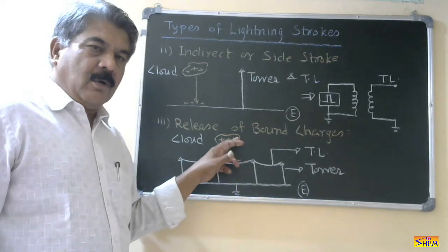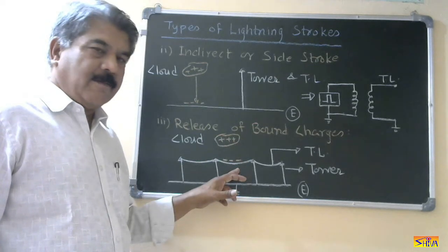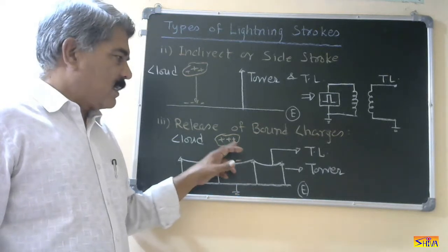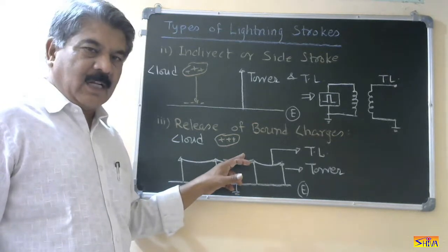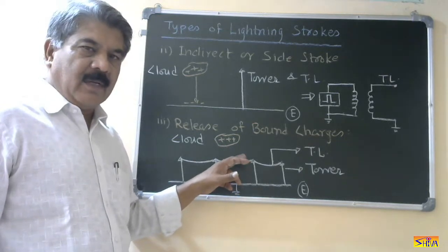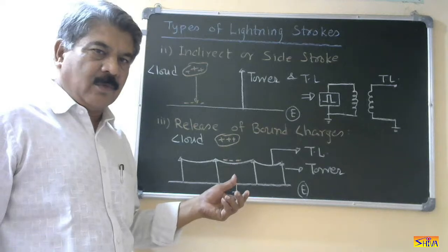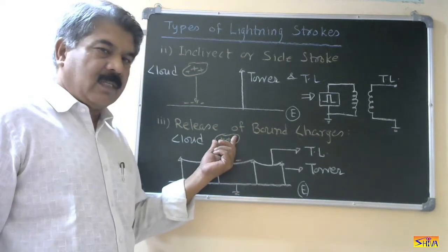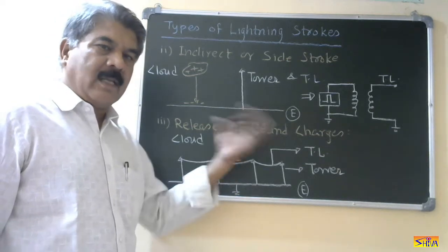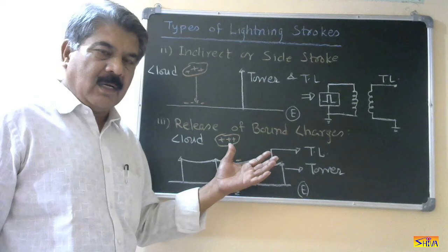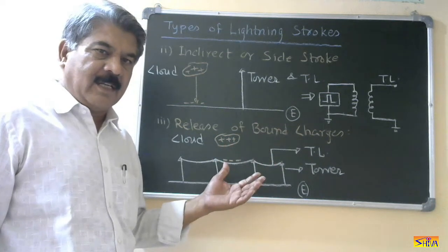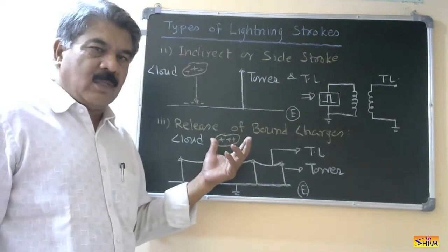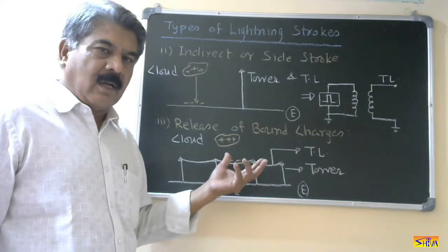Now if this cloud discharges on the transmission line, it is a direct stroke. If it discharges near to the transmission line, it is an indirect or side stroke. There is also a possibility that this cloud discharges to another cloud — it neither discharges on the transmission line nor near to it.